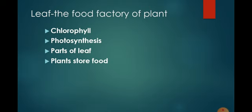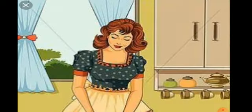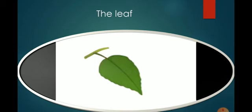Now kids, the place at your house where your mom cooks food for you, that place is called kitchen. Now if plants also there is a part where the food is being prepared, that part is called leaf. So now we will start our first chapter, leaf, the food factory of plant or kitchen of the plant.